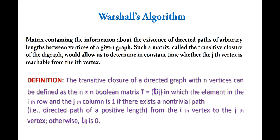Transitive closure is a matrix containing information about the existence of directed paths of arbitrary length between the vertices of a given graph. Such a matrix is called the transitive closure of the digraph. It allows us to determine in constant time whether vertex j is reachable from vertex i — whether a path exists directly or indirectly.